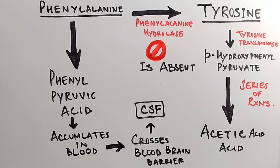The major effect of the gene mutation is mental retardation. The minor effects include depigmentation and a mousey smell. Depigmentation occurs because melanin is not formed in normal quantities. The mousey smell occurs because phenylpyruvate acid is secreted through sweat, which gives a characteristic mousey smell.